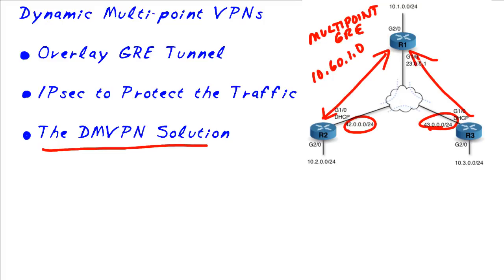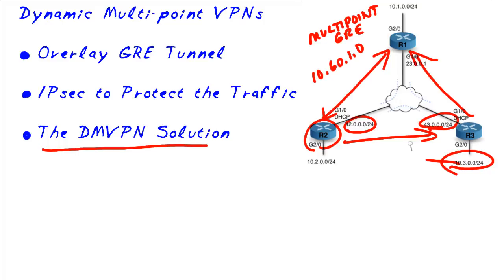From a routing perspective, if R2 ever needs to reach the 10.3 network or a server on that network, it makes a request through the protocol called Next Hop Resolution Protocol (NHRP). R2 says it wants to talk to R3 and build an IPsec tunnel directly. It asks R1 for the next hop or global address of R3. R1 feeds that to R2, and then R2 builds the IKE Phase 1 and IKE Phase 2 policies that are part of IPsec directly, and then GRE traffic flows directly between R2 and R3.